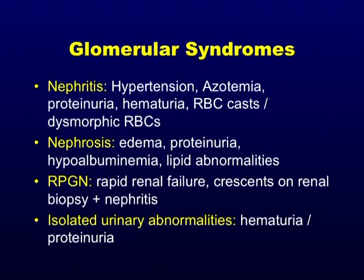Rapidly progressive GN is defined arbitrarily as a doubling of creatinine or 50% reduction in GFR within three months. But for the boards, it's someone who out of the blue develops kidney failure with glomerular abnormalities. When you biopsy these people, they have crescents on kidney biopsy. A crescent forms when immunologic injury creates holes in the capillary loops, so blood filters into Bowman's capsule causing proliferation — epithelial cell proliferation with platelets and other plasma contents in Bowman's space.